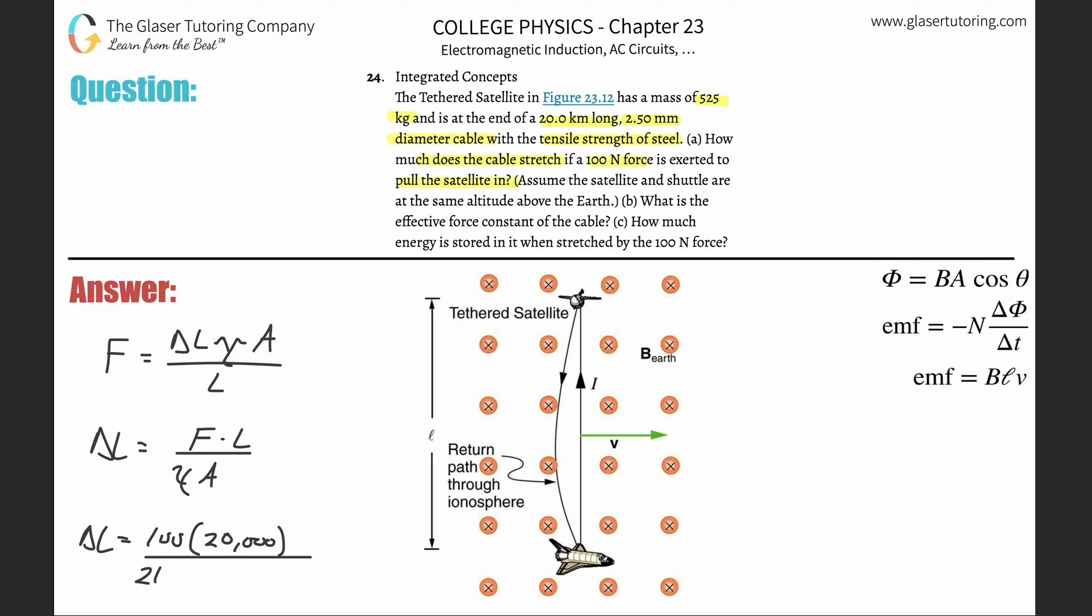Then that's all going to be divided by Young's modulus, which for steel is 210 times 10 to the ninth, units are newtons per meter squared. Then the cross-sectional area is going to be pi multiplied then by the radius squared, and they gave us the diameter.